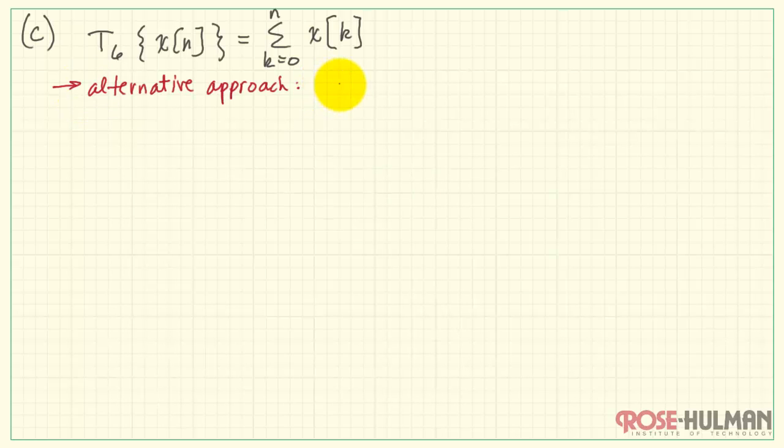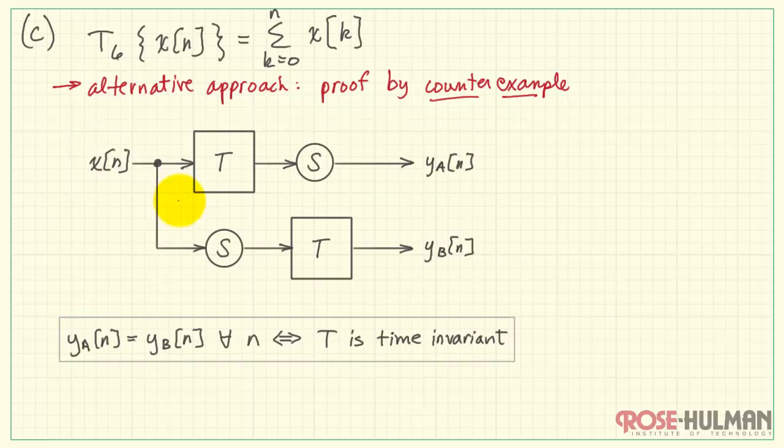Now, I want to show you an alternative approach based on doing a proof by counter example. That means if I can find even one specific input for which y_a and y_b are not the same, then we have demonstrated that it is not time invariant.